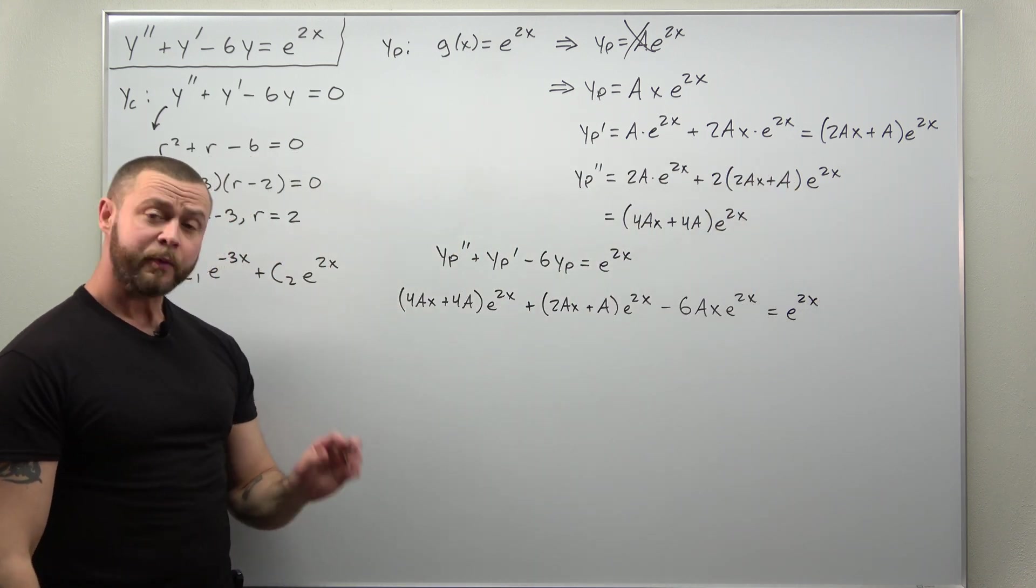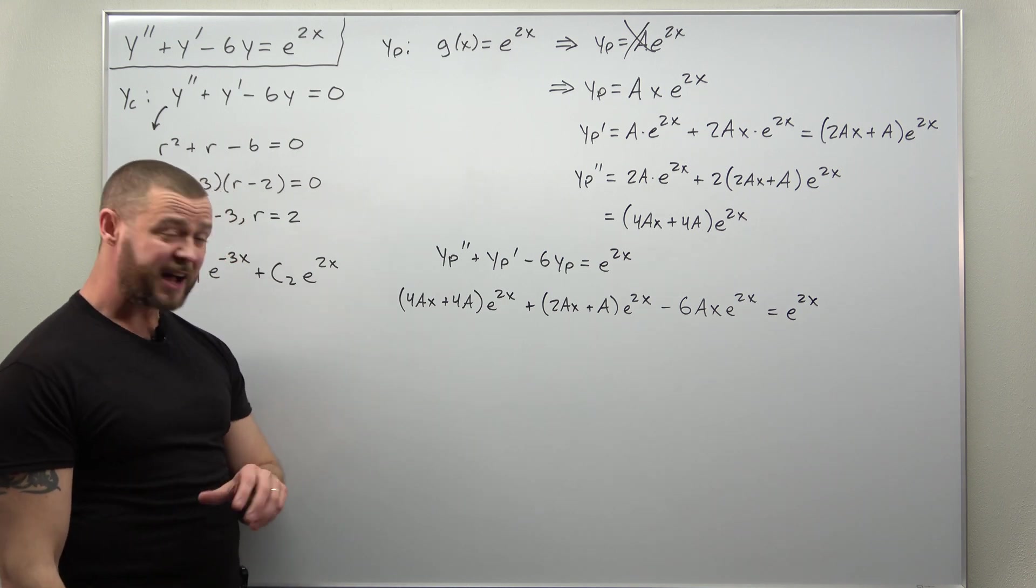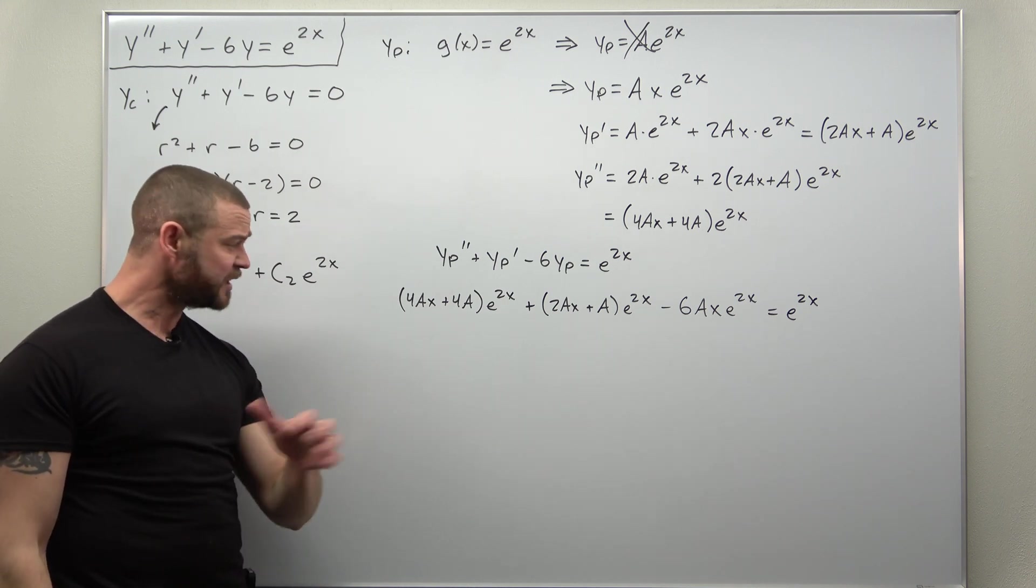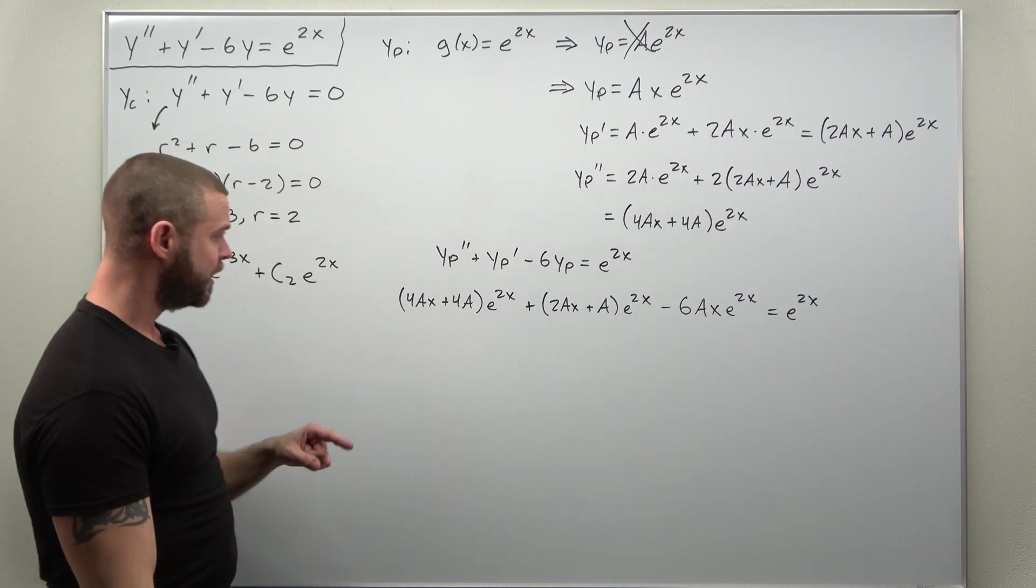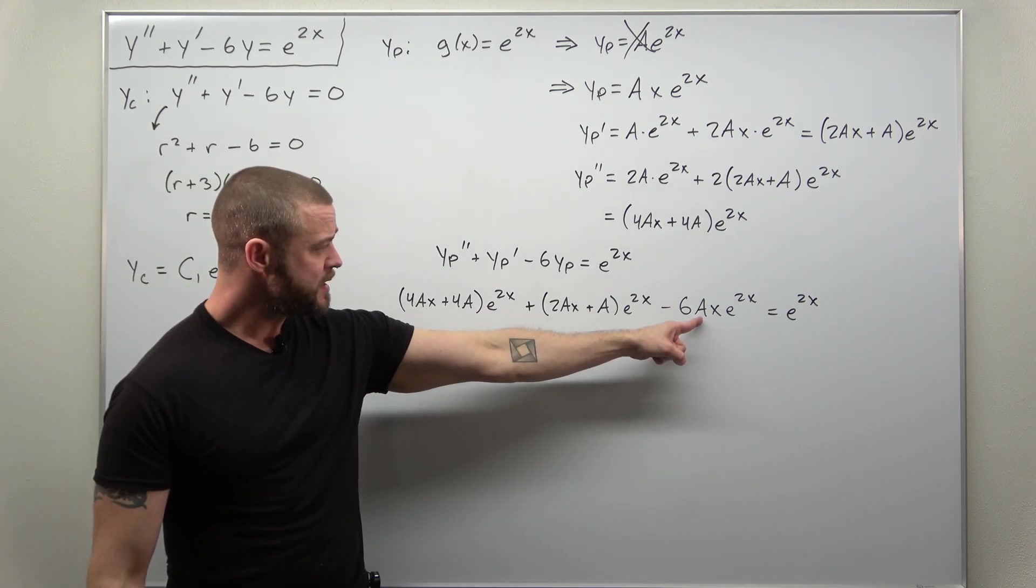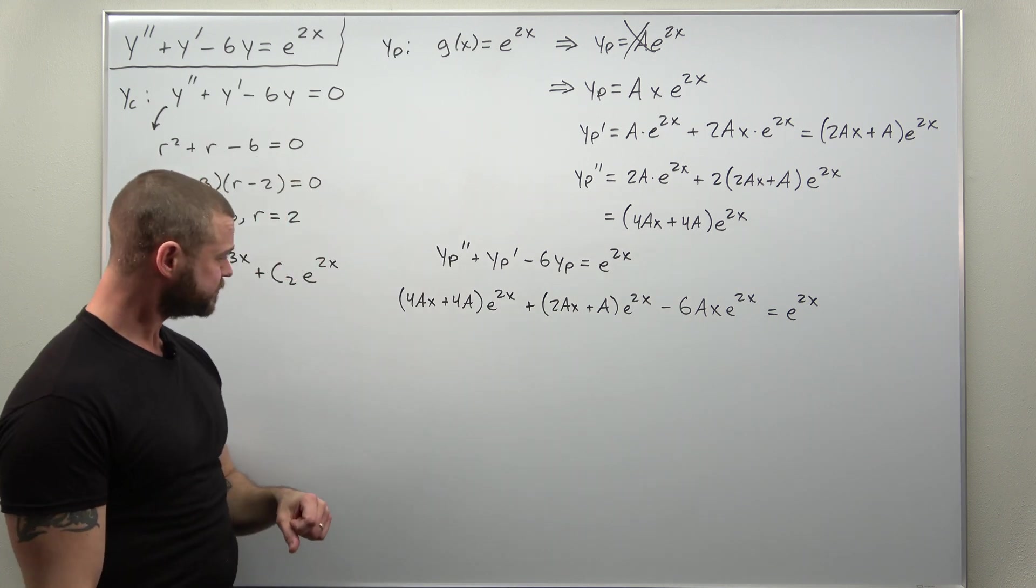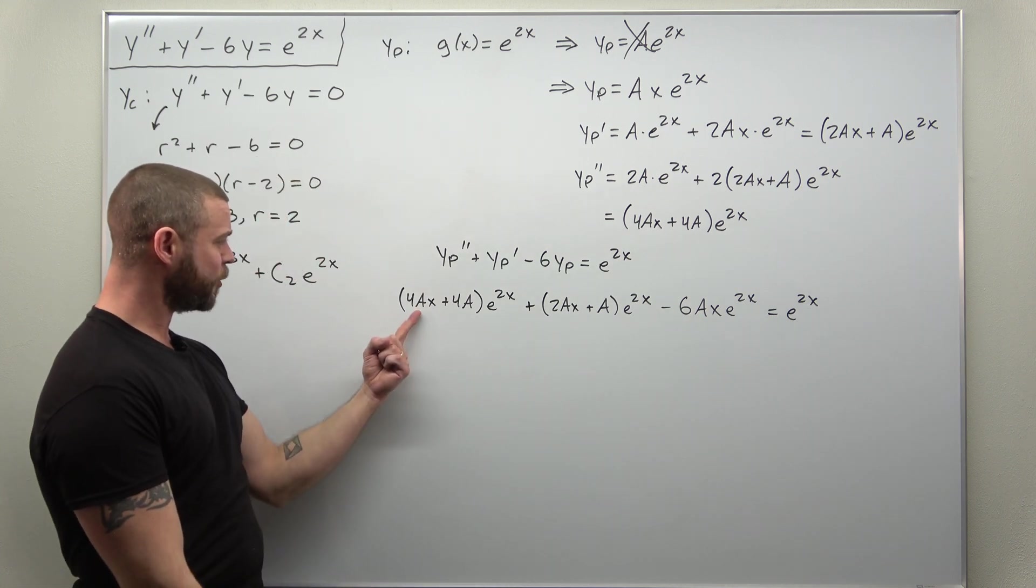From here, we should be able to simplify and cancel some terms out, combine some like terms. Can we see any of that just completely cancel? Well, I'm looking at the Ax terms. And what I notice is I have 4Ax, 2Ax times the exponential minus 6Ax times the exponential.